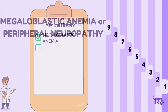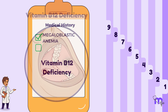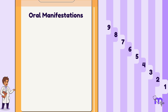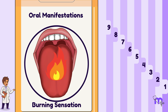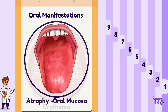Finally, a positive medical history of megaloblastic anemia suggests the possibility of vitamin B12 deficiency as a cause of the pigmented lesion. Oral manifestations associated with vitamin B12 deficiency include burning sensation, erythema, and atrophy of the oral mucosa.